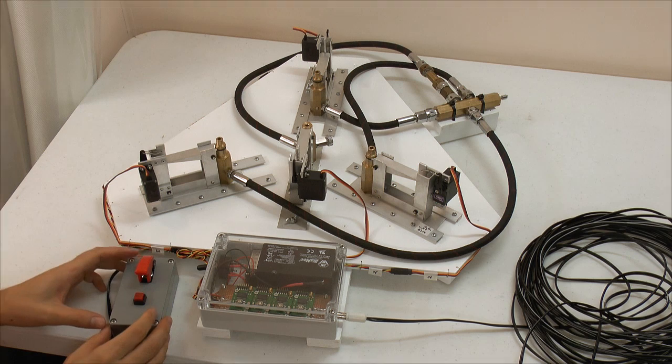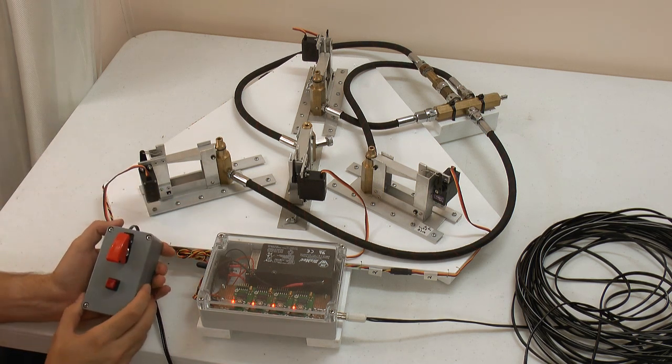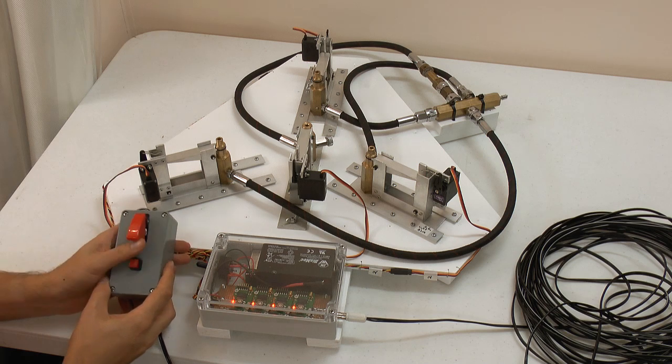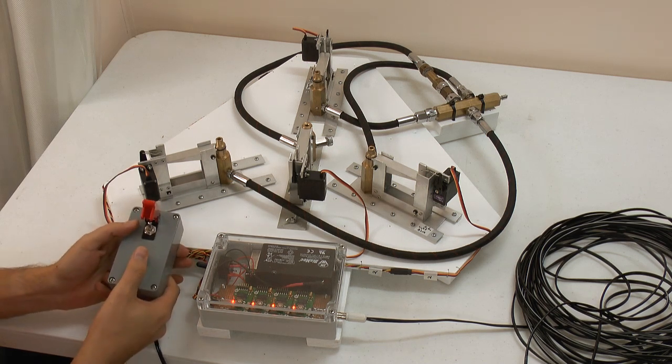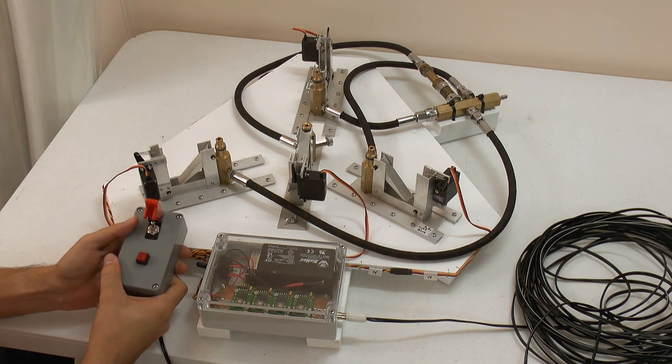And you would at this stage pressurise it, turn the system on, and when you're ready to launch you would just arm it, and count down, 3, 2, 1, and it launches the rocket.